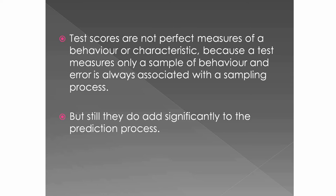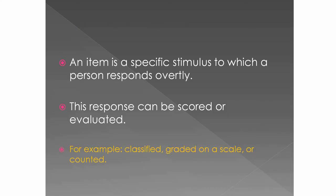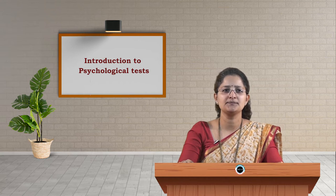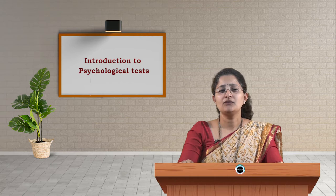But still, tests do add significantly to the prediction process. An item in a test is a specific stimulus to which a person responds overtly; this response can be scored or evaluated. Psychological and educational tests are made up of items. The data they produce are explicit and hence subject to scientific inquiry. In simple terms, items are the specific questions or problems that make up a test.